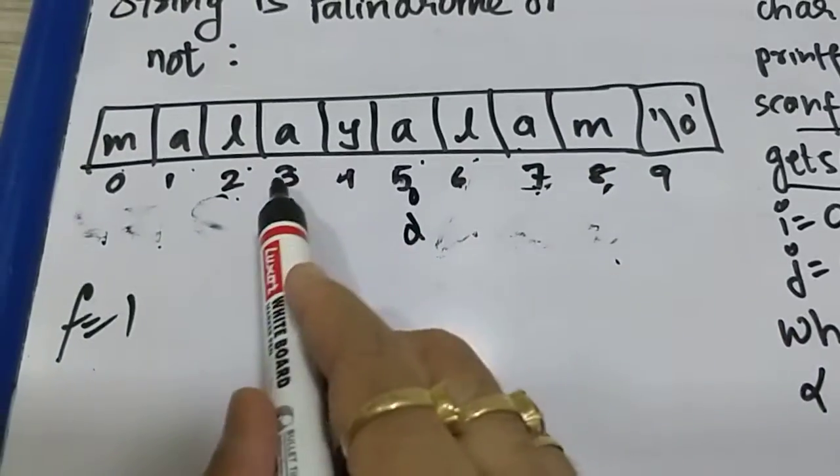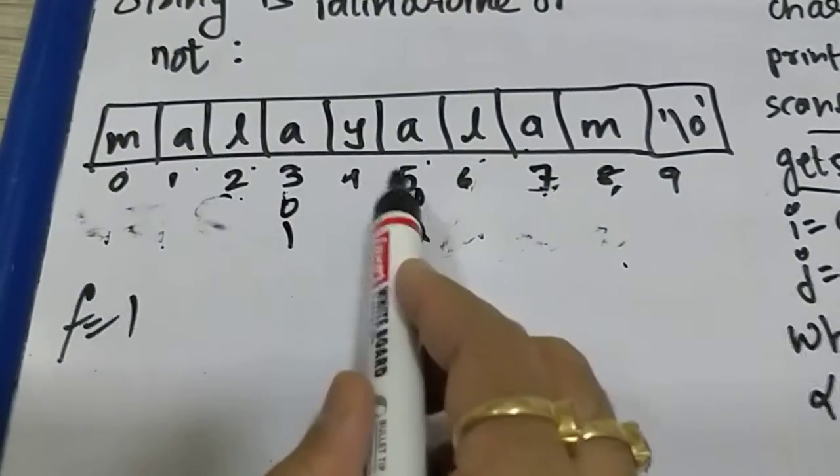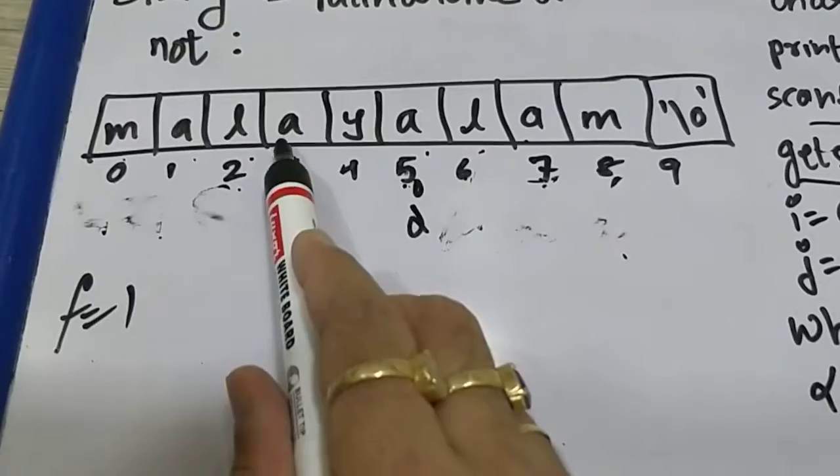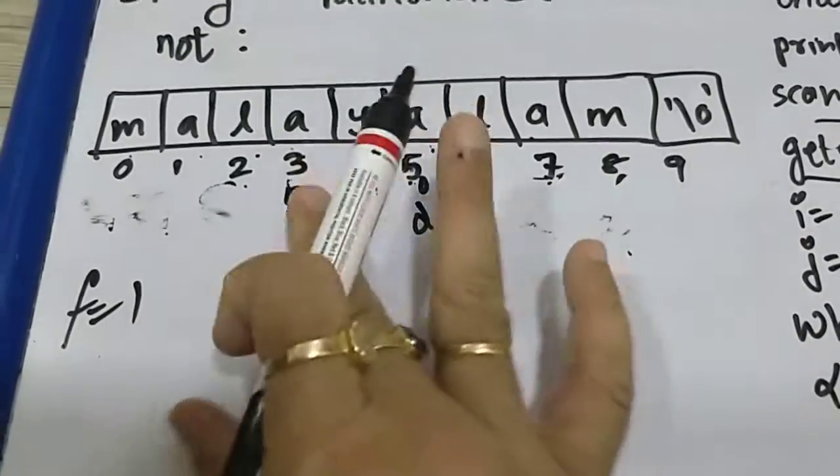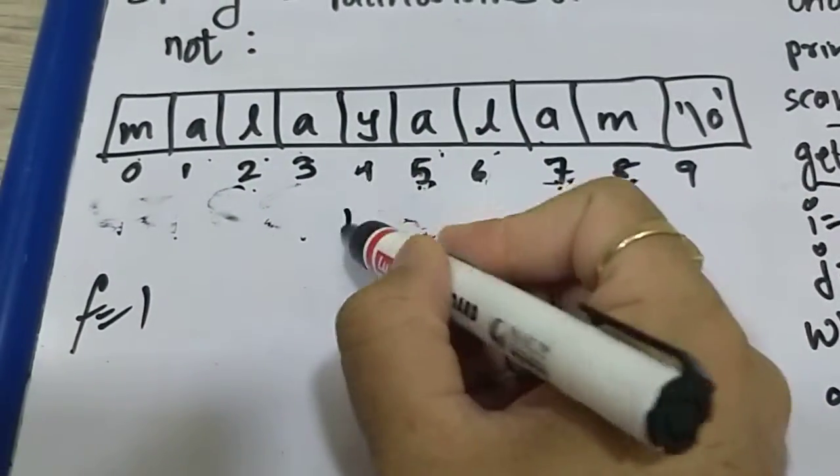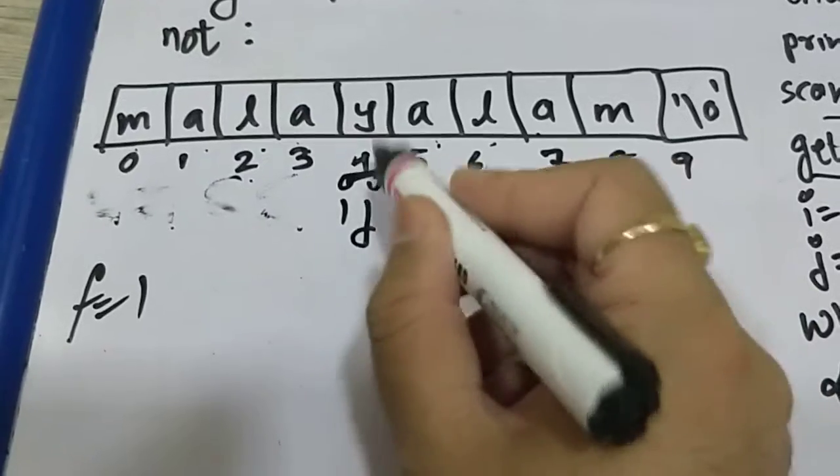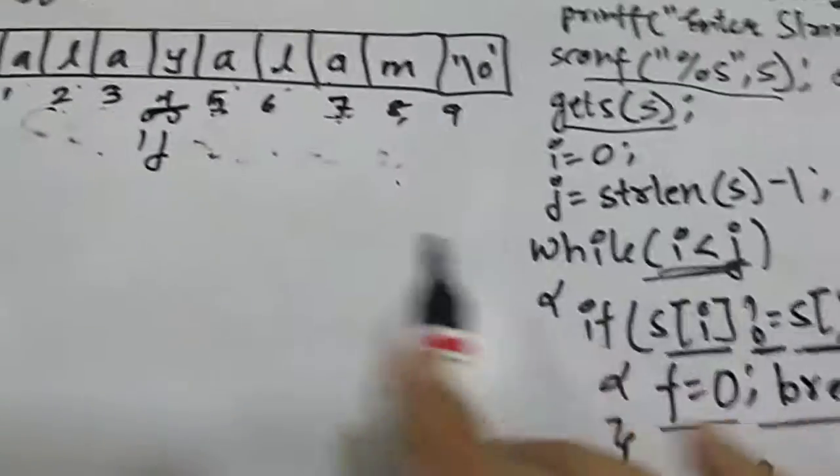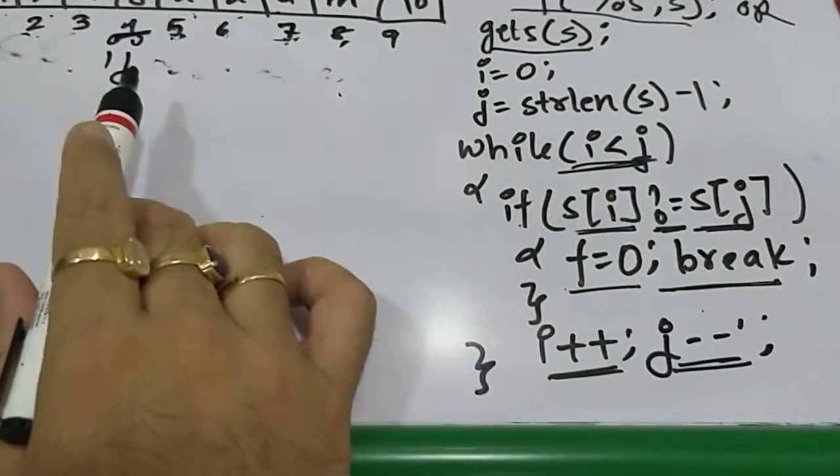S of i not equal to s of j? False. i plus plus, j minus minus. Now i is at three, j is at five. i less than j, yes. S of i 'a' not equal to s of j? False. i plus plus, j minus minus.